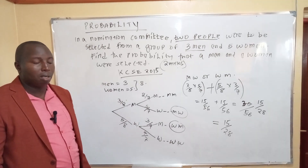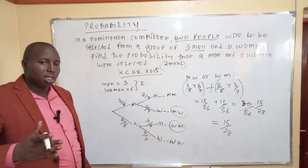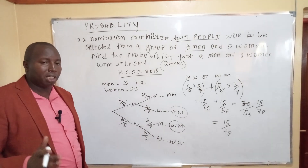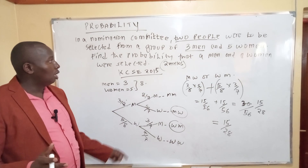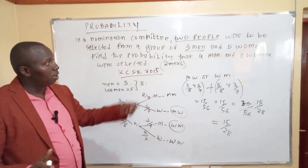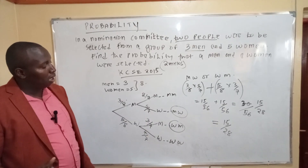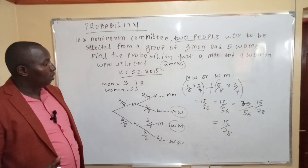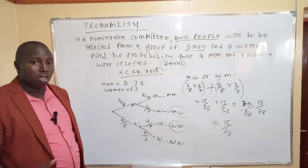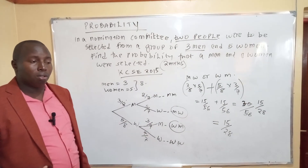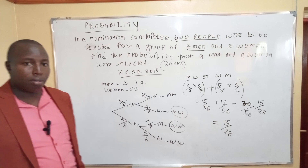The answer is 5 over 28. And that's how you do that kind of probability question.